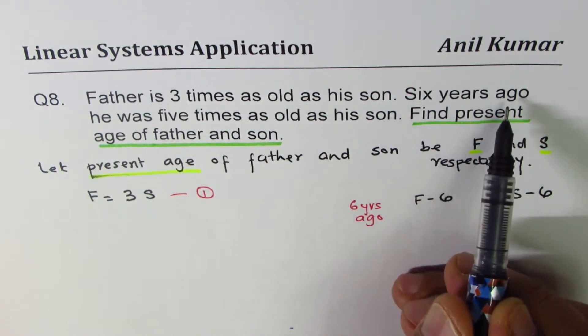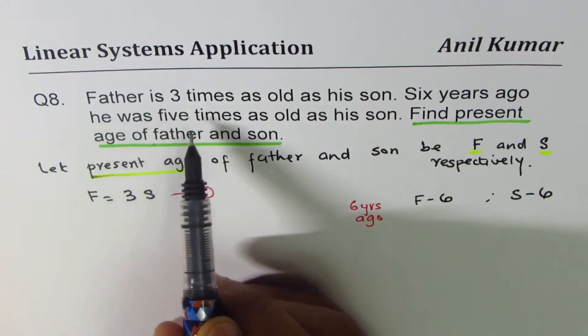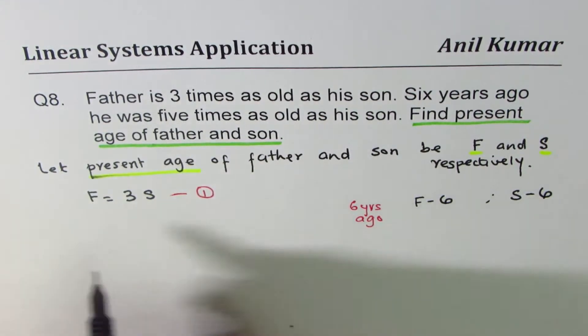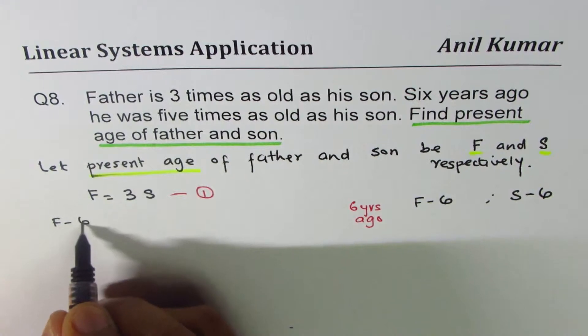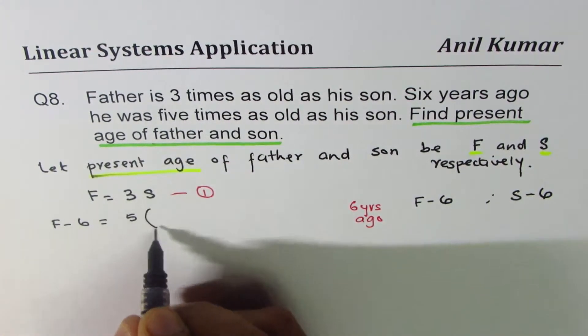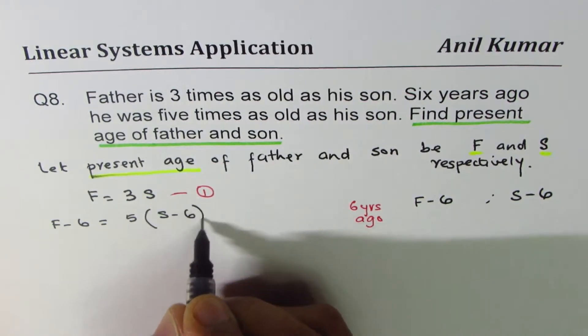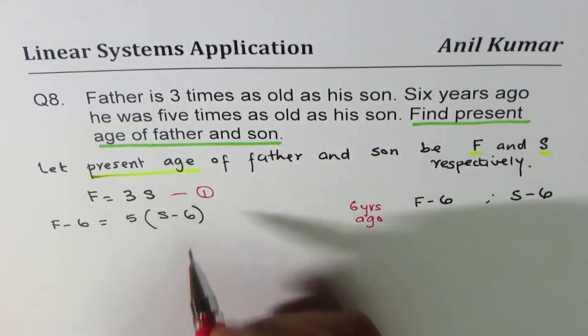Now read the statement once again. It says, six years ago, he was five times as old as son. That means F minus six is five times S minus six. Do you get it? So you get a second equation.